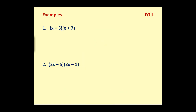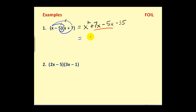Let's take a look at another example. We're going to multiply X times both terms in the second — there's the F and the O for first terms and outer terms. Then we'll multiply negative 5 times both terms — this would be the inner product and this would be the last product. So we have X times X or X squared; X times positive 7 would be plus 7X; negative 5 times X would be negative 5X; and negative 5 times positive 7 equals negative 35. Combining our like terms, we have X squared plus 2X minus 35.